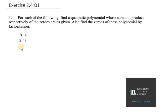Hello everyone, so let's start with question number one of exercise 2.4 NCERT example. In this question it says find a quadratic polynomial whose sum and product respectively of the zeros are given.